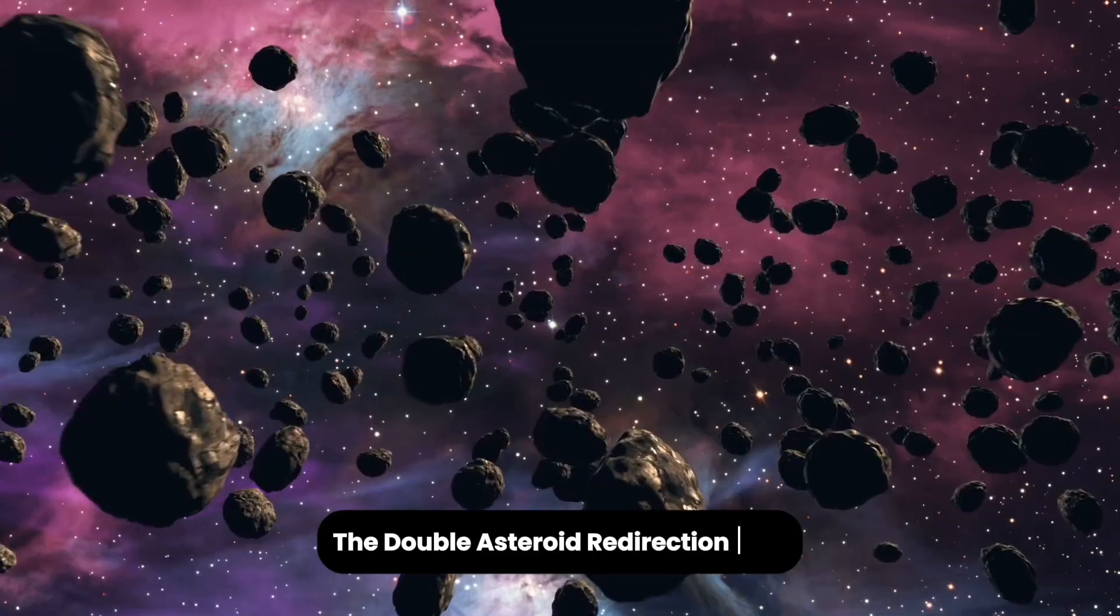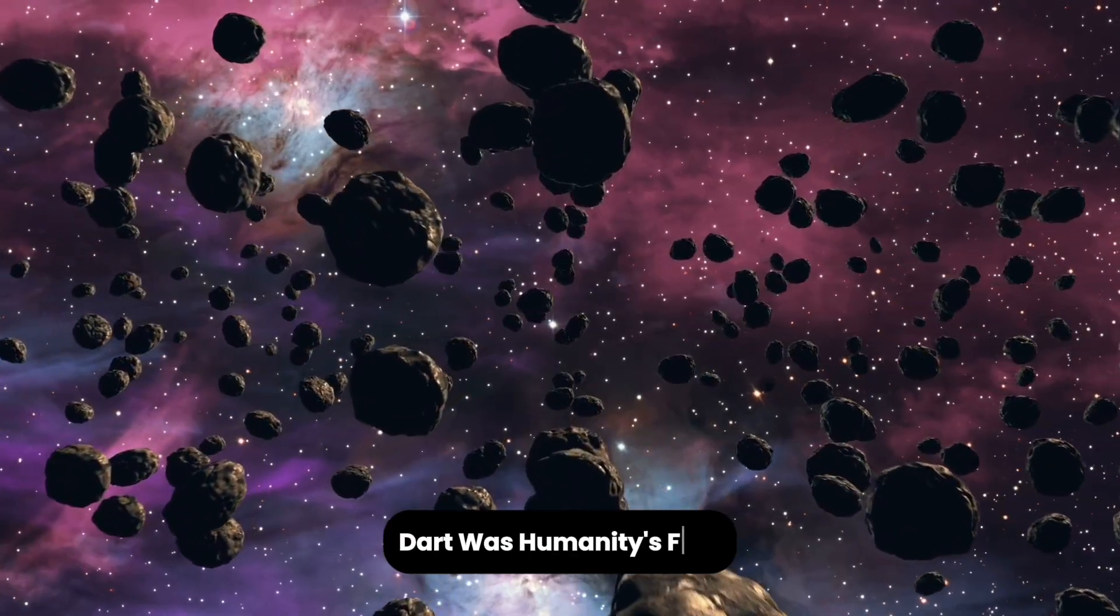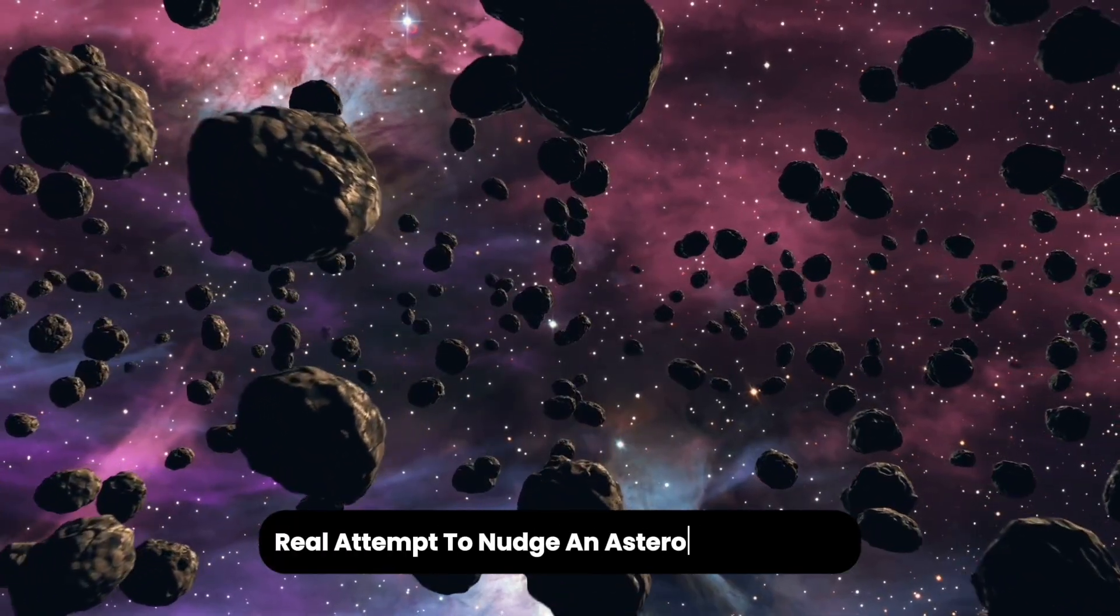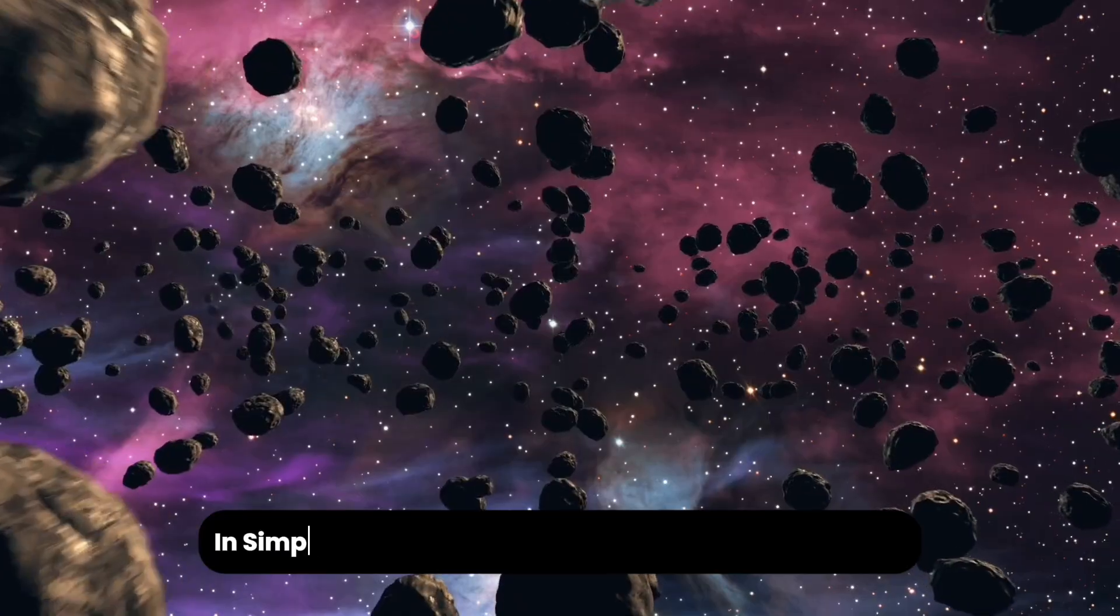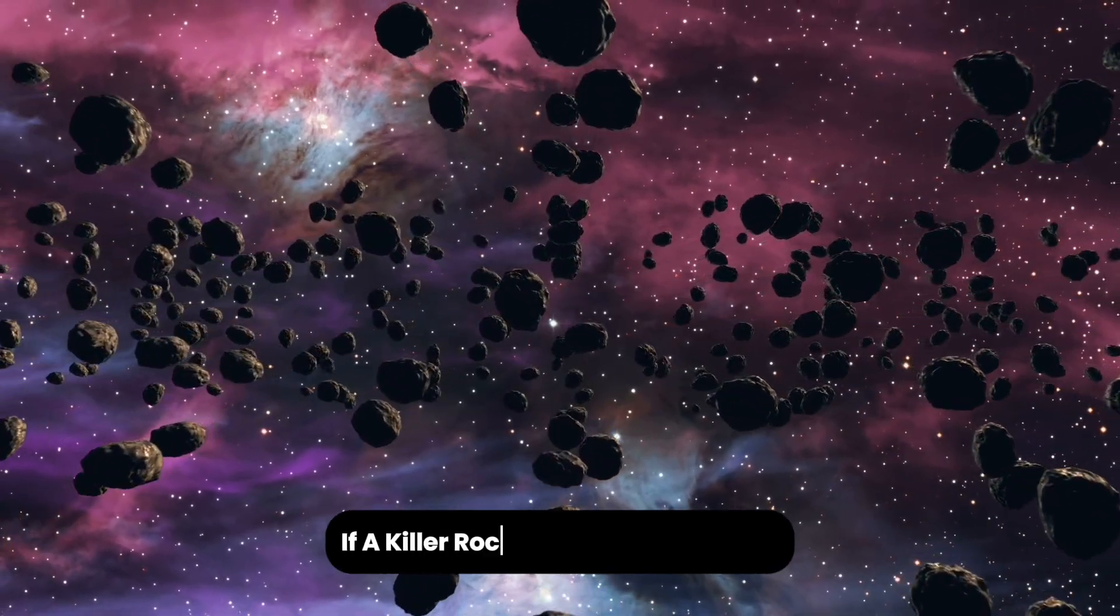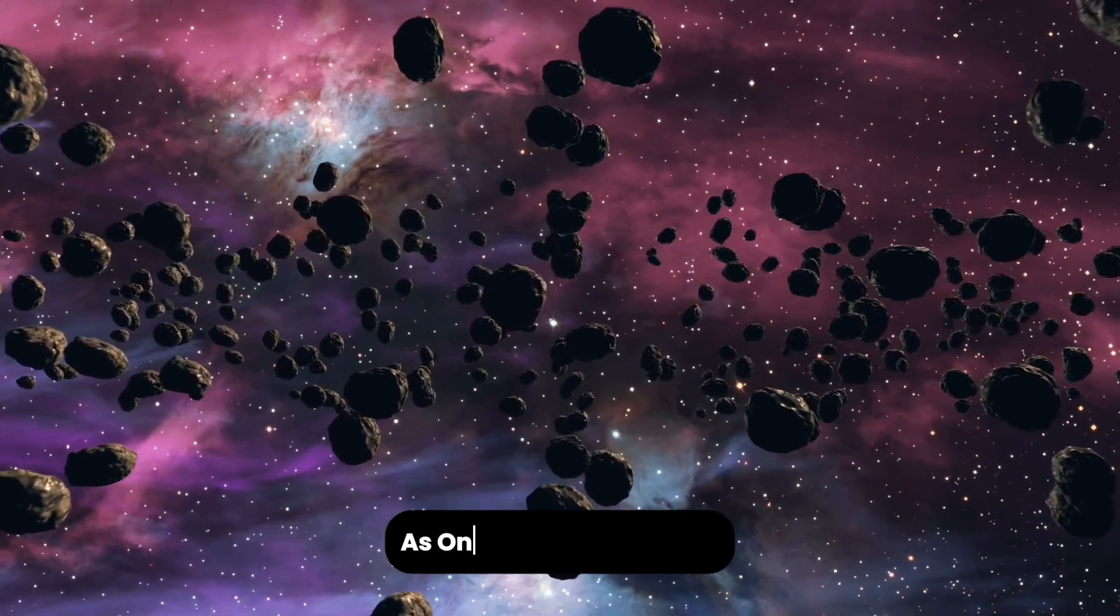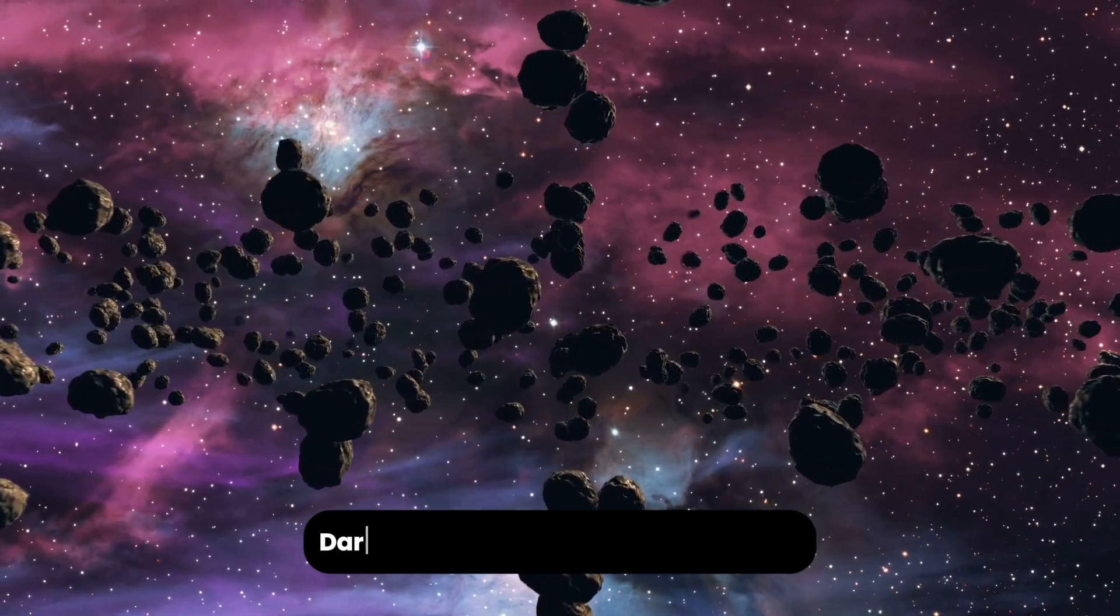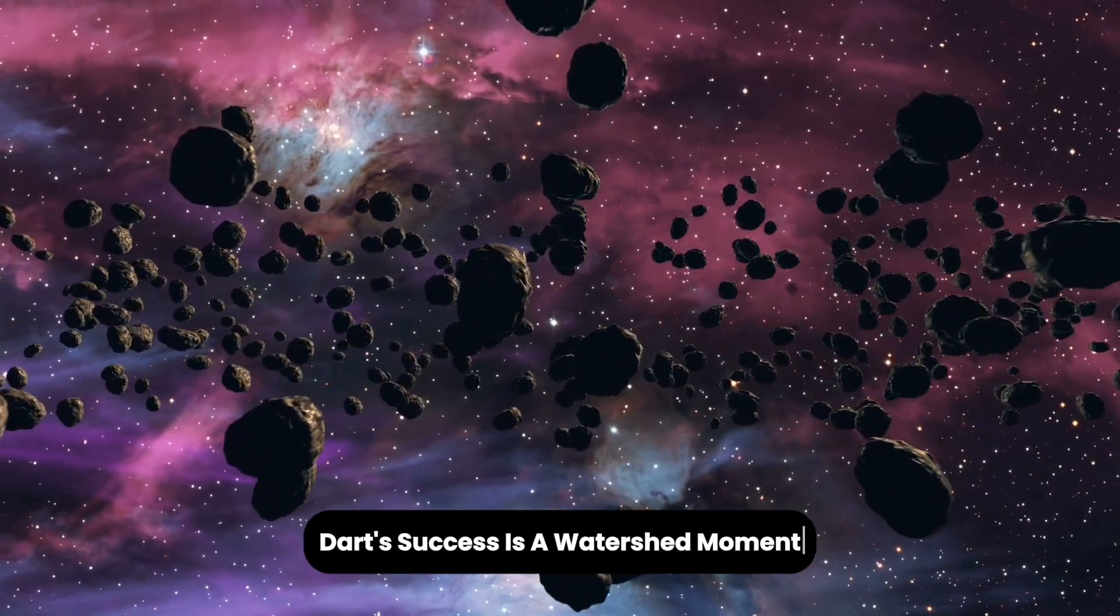The double asteroid redirection test, DART, was humanity's first real attempt to nudge an asteroid off course. In simple terms, it was a test run for planetary defense, proving we can protect our planet if a killer rock ever comes our way. As one NASA official put it, DART's success is a watershed moment for planetary defense.